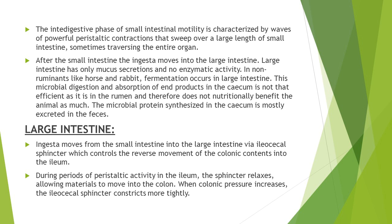The ileocecal sphincter consists of a well-developed ring of circular muscles that remains constricted most of the time. In many species there is also a flap of mucosa that acts as a one-way valve and causes further blocking of movement of colonic contents into the ileum. During periods of peristaltic activity in the ileum, this sphincter relaxes and allows the movement of materials into the colon, and when colonic pressure increases, the ileocecal sphincter constricts more tightly.